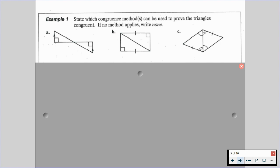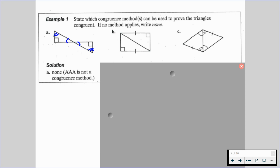So let's go through an example. We're going to state which congruence methods can be used to prove the triangles congruent. If no method applies, we're going to write none. So in diagram A, diagram B, and diagram C are going to be three separate examples. For A, we always want to see if we have a reflexive side or if we have vertical angles. We have vertical angles. And do we have anything else here? We know we have parallel lines, so we have alternate interior angles. But can we have AAA? No. AAA is not congruent. AAA would say that triangles are similar, but not congruent.